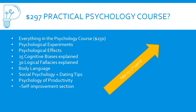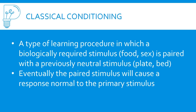I've also been thinking about a practical psychology course that would include everything in the basic course, plus psychological experiments, psychological effects, at least 25 videos on cognitive bias, and 30 videos on logical fallacies — with examples of what they are and how to use them in marketing or to get people to like you. It would also cover body language, social psychology, evolutionary psychology, dating tips, psychology of productivity, and maybe some self-improvement. Leave your answer in the poll if you would or wouldn't buy a $297 course that includes all of this.